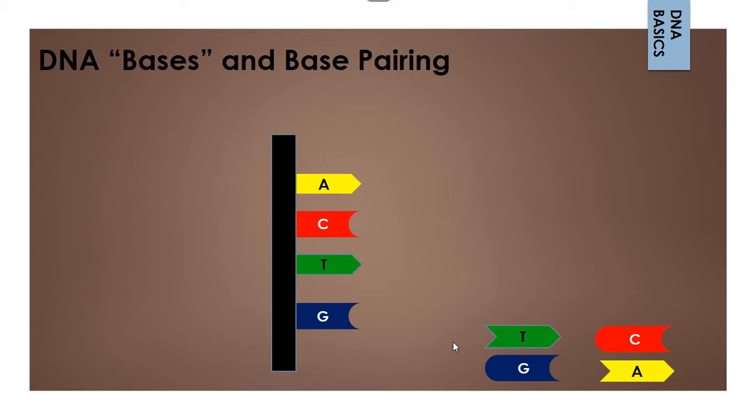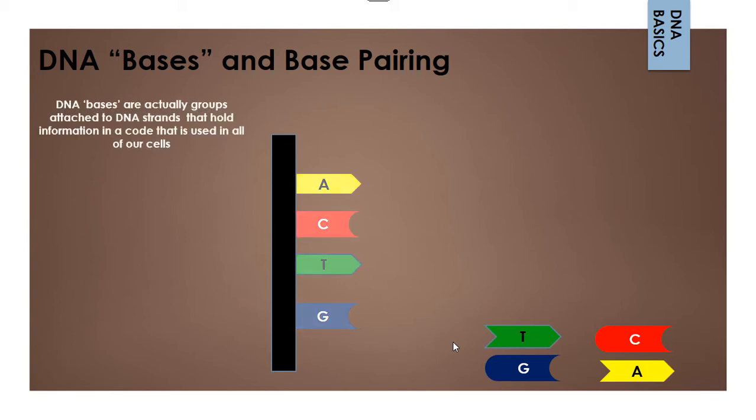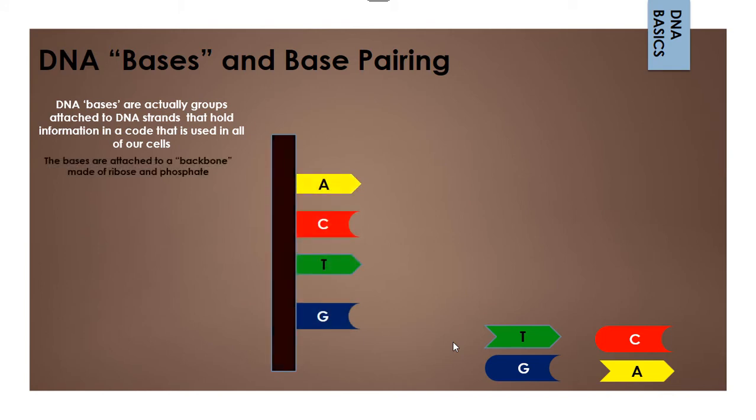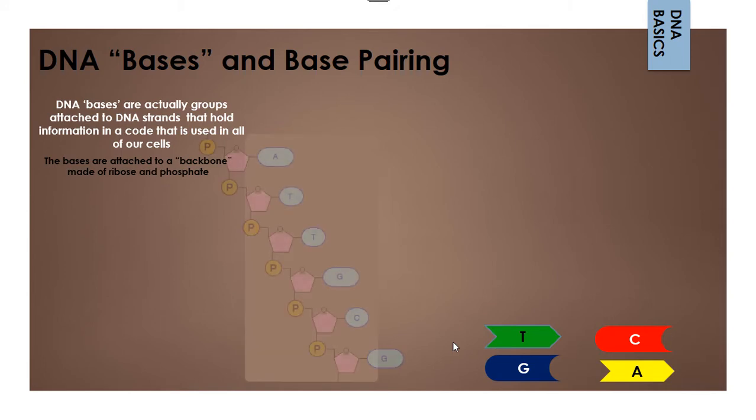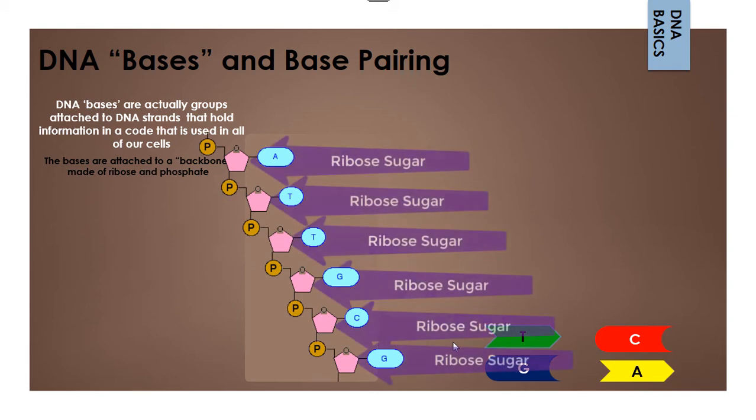DNA is a molecule that keeps a code of information in our cells for everything about us, and this is the way that it works. It's actually a four-letter code. The letters of the code are called bases, and they hold the information in the cells, and then they're attached to a backbone, which is made of ribose sugar and phosphate sort of interconnected over and over again.